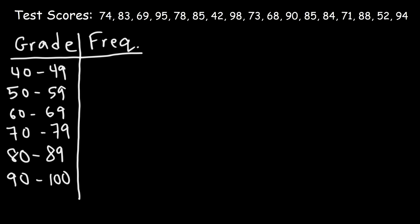How many students received a score between 40 and 49? Looking at our data, there's only one score in the 40s, and that's 42. So the frequency for this range is 1 — only one student had a grade between 40 and 49. What about between 50 and 59? The only score in that range is 52, so the frequency is again 1.